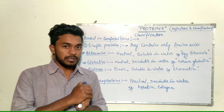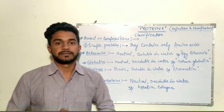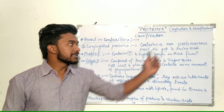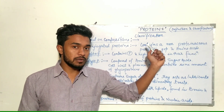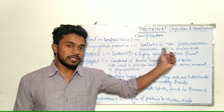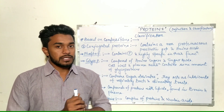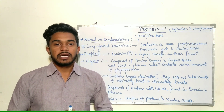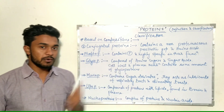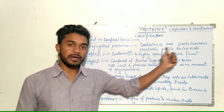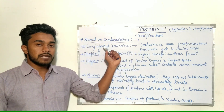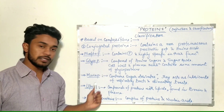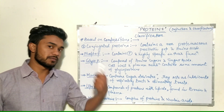Conjugated proteins contain a non-proteinaceous part known as a prosthetic group along with amino acids. In simple proteins only amino acids are present, but conjugated proteins contain both prosthetic groups and amino acids. Types of conjugated proteins include phosphoproteins, glycoproteins, mucoproteins, lipoproteins, and nucleoproteins.